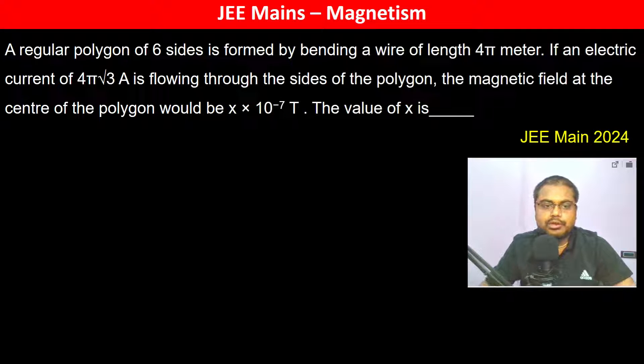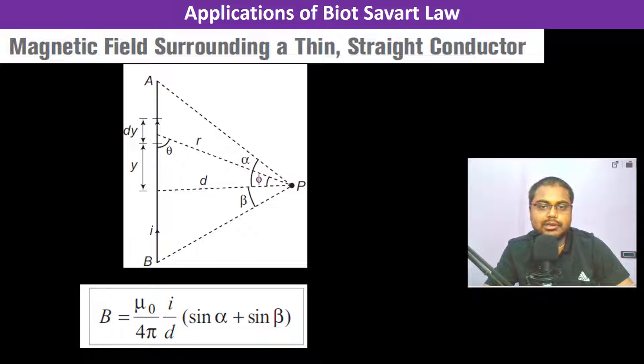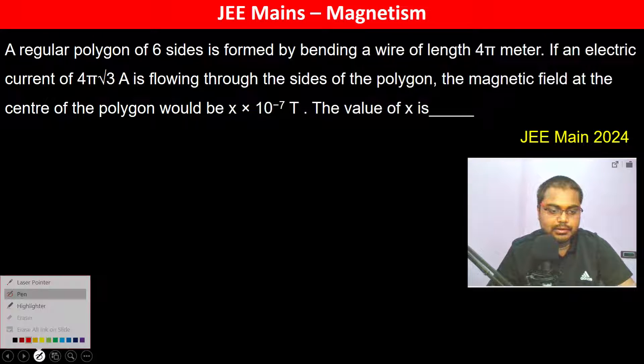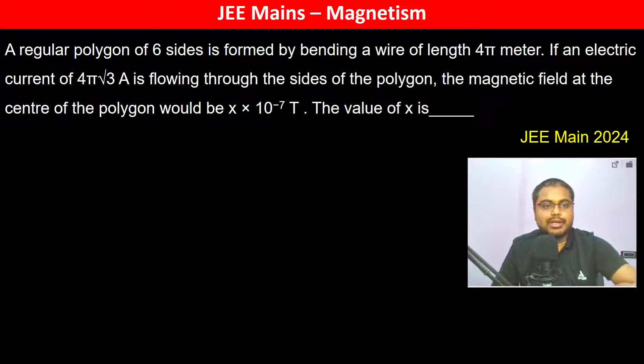A regular polygon of 6 sides is formed by bending a wire. The magnetic field surrounding a thin straight conductor is given by this formula, where alpha and beta are the angles subtended by the conductor on point P.